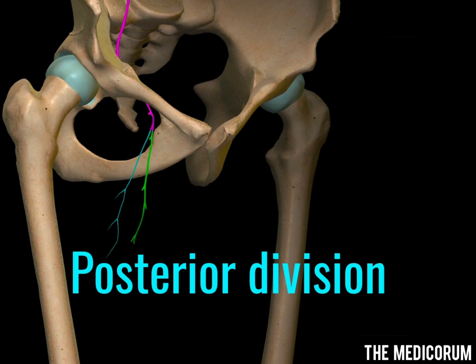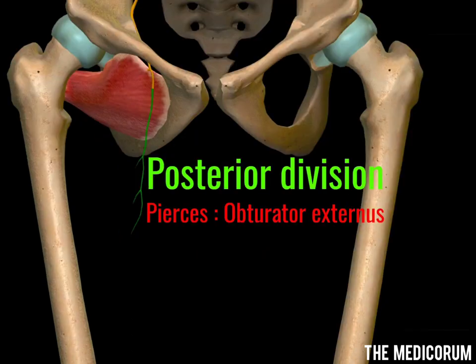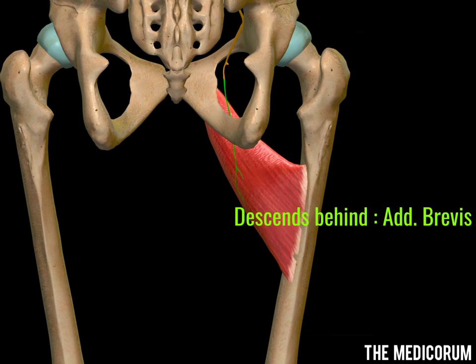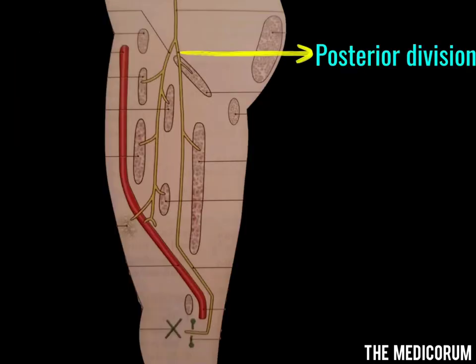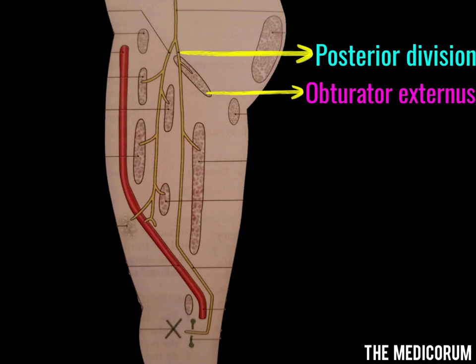Moving on to the posterior division: it pierces the obturator externus muscle and then descends behind the adductor brevis. As seen in this figure, it supplies the obturator externus and adductor magnus.